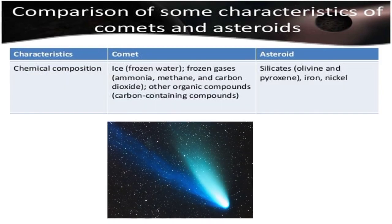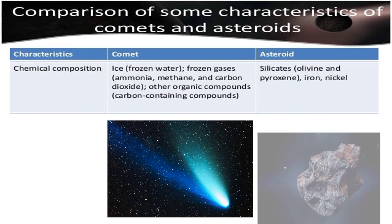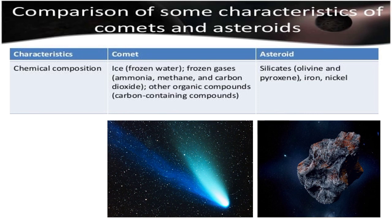The chemical composition of a comet are frozen water, frozen gases such as ammonia, methane, and carbon dioxide, and other organic compounds like carbon-containing compounds. While asteroids are composed of silicates, iron, and nickel.